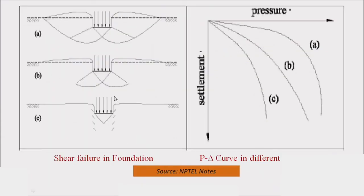In the zone diagram, the first zone is the active zone (triangular), the second is the shear zone, and the third is the passive zone — same for both figures. The right-side figure is a pressure versus settlement curve: curve A relates to general shear failure, B to local shear failure, and C to punching shear failure.